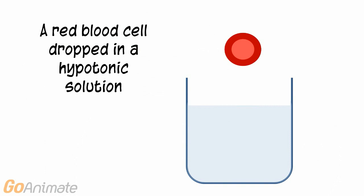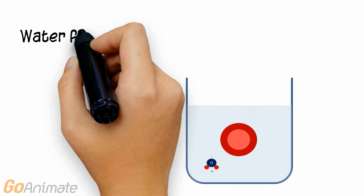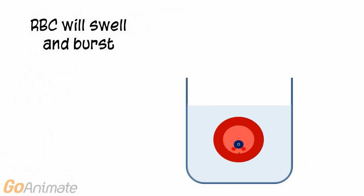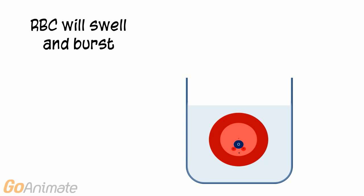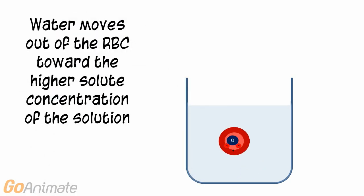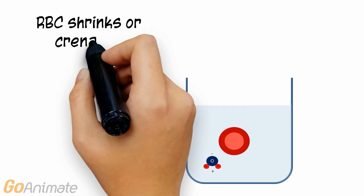In this experiment, a red blood cell is dropped into a hypotonic solution. Water will flow into the red blood cell because the cell contains a higher solute concentration. The cell will swell and burst. Likewise, if a red blood cell is dropped into a hypertonic solution, water will flow out of the cell causing it to shrink, or crenate. Water again flows toward the higher concentration of solute, which this time is outside of the cell.